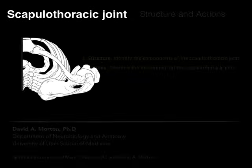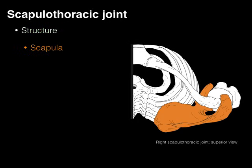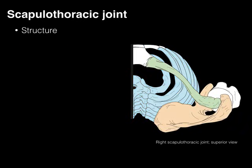To start, let's take this image, which is a right scapulothoracic joint from a superior view, and look at its components. First, the scapula in orange — your shoulder blade — which articulates with the thoracic trunk, or better yet, your ribs and your ribcage. The space between them forms the scapulothoracic joint.